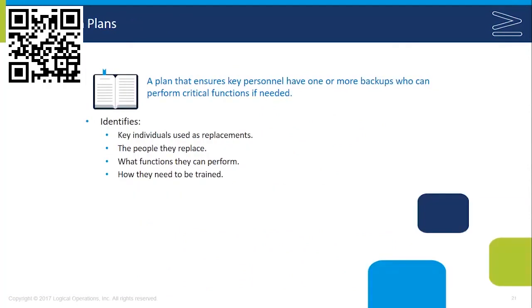Succession plans are another part of the BCP. This is a plan that ensures key personnel have one or more backups who can perform critical functions if needed. It identifies key individuals used as replacements, the people they replace, the functions they can perform, and how they may need to be trained. This deals with personnel loss primarily.